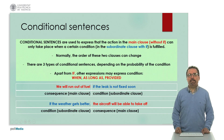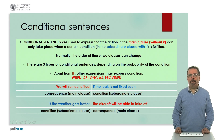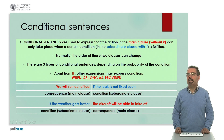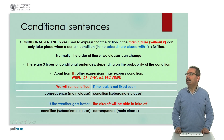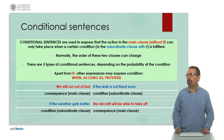Conditional sentences are those used to express that an action in the main clause can only take place when a certain condition in the subordinate clause — introduced by 'if' — is fulfilled. Normally the order of the two parts of the sentence can vary, and there are three types of conditional sentences in English, dependent on the probability of the condition, and they use different types of verbs.